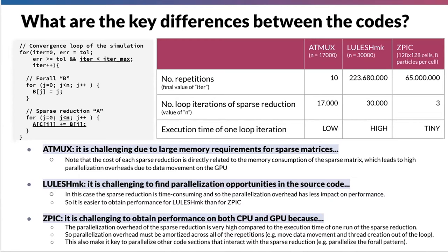Finally, the computation itself: every iteration of the sparse reduction can be just three floating-point operations or can involve millions of floating-point operations. This is where we have found different properties in the sparse reductions of the three use cases. ATmax has only 10 repetitions. The number of iterations of the sparse reduction depends on the matrix size — the selected problem is 17,000.